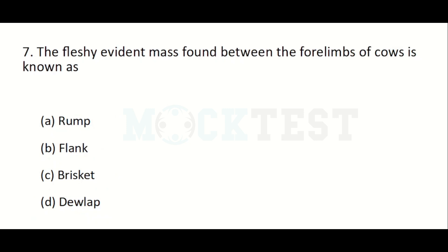The fleshy mass found between the four limbs of a cow is known as: Option A: ham. Option B: flank. Option C: brisket. Option D: dewlap. The answer is Option C, brisket.